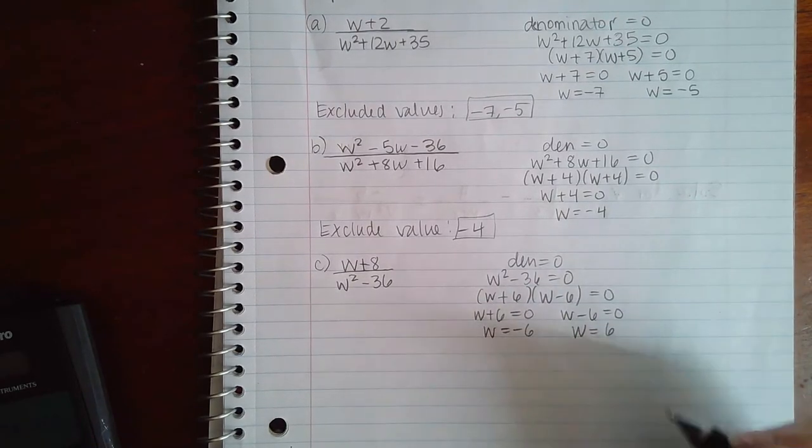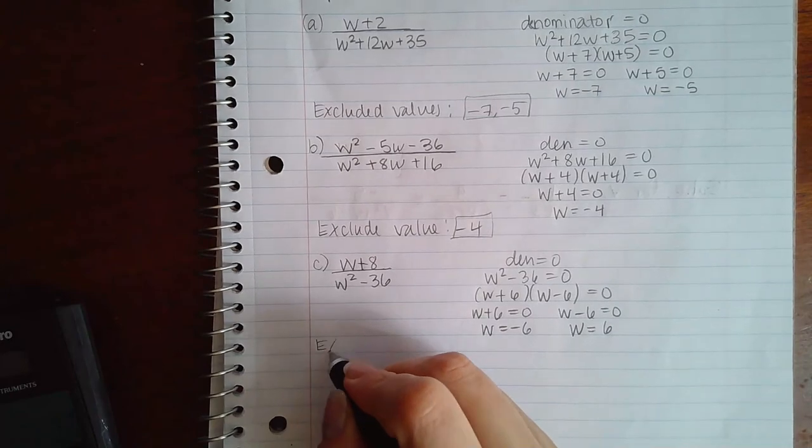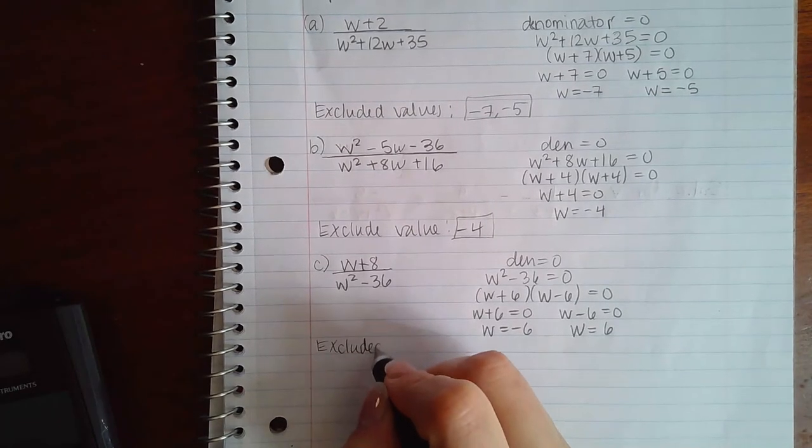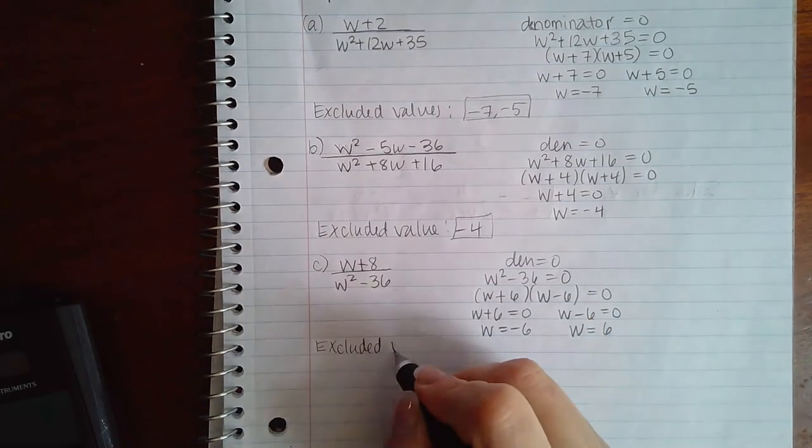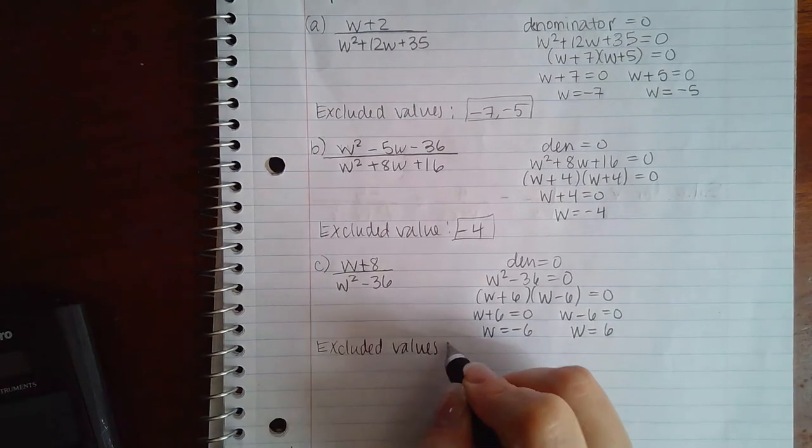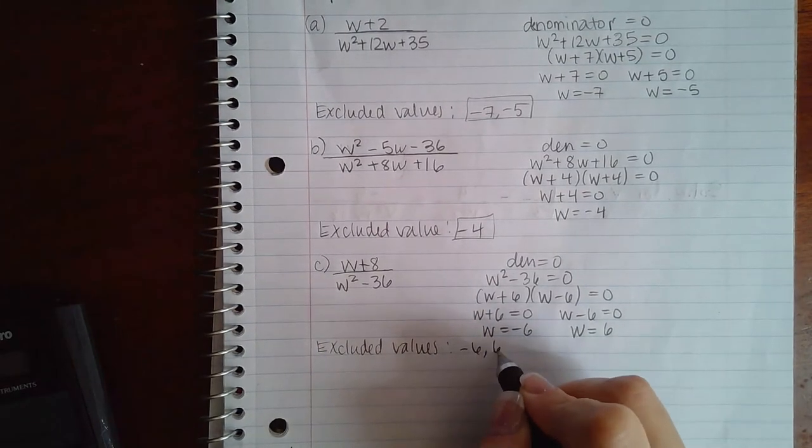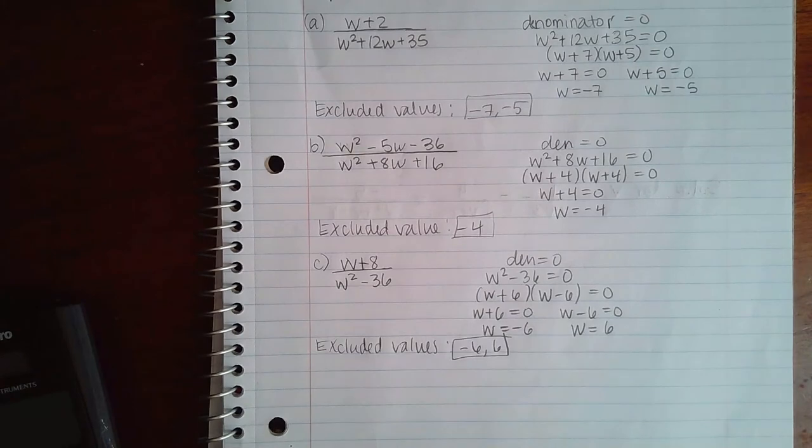So when they ask me for those excluded values, I have negative 6 and positive 6. And that's all you're doing, it's the same thing as what we did before when we had a linear equation.